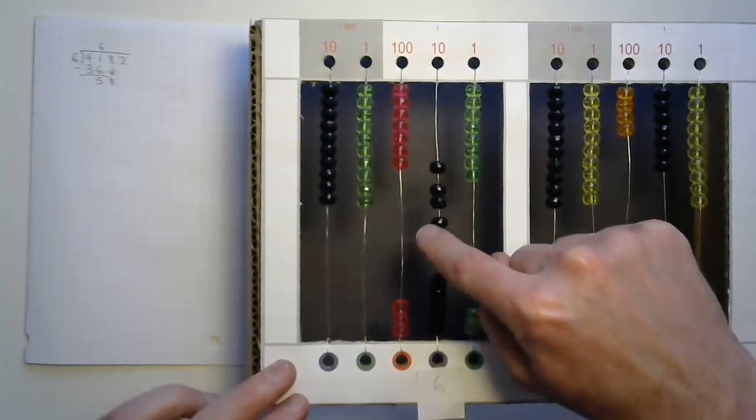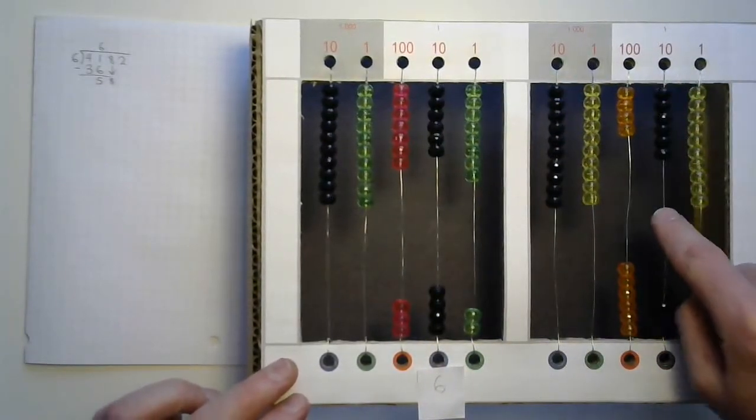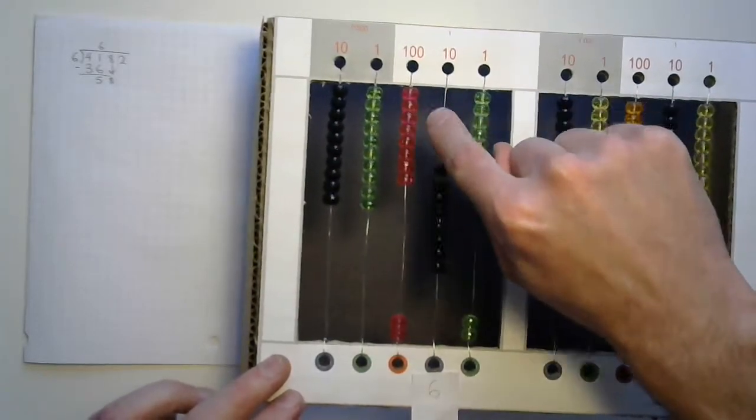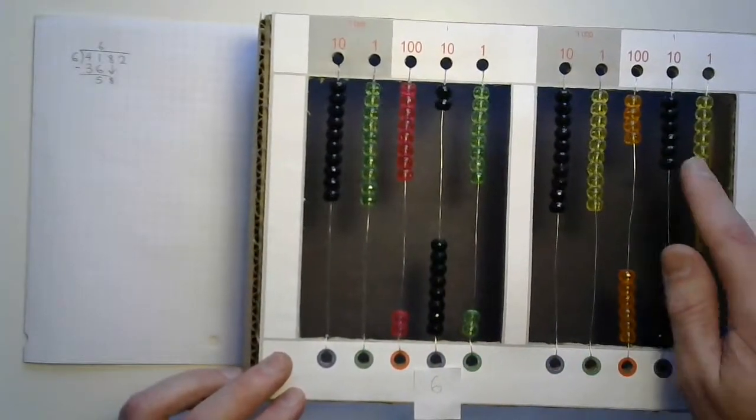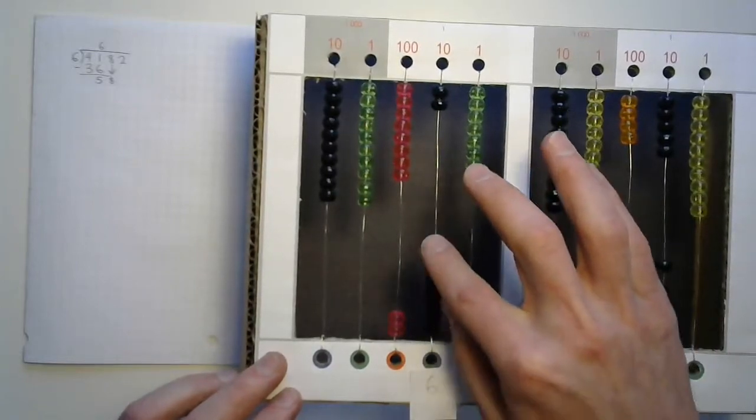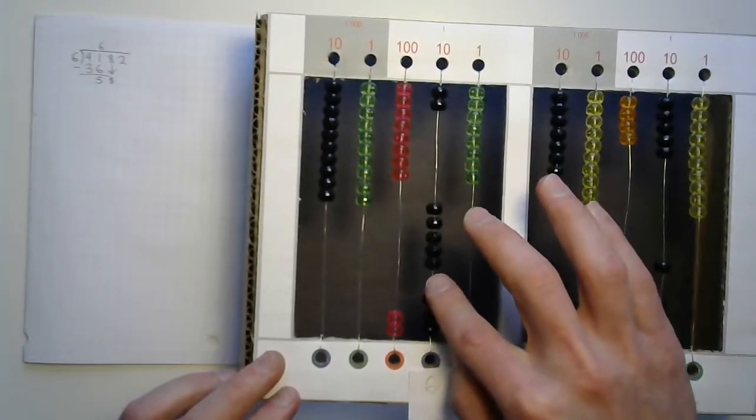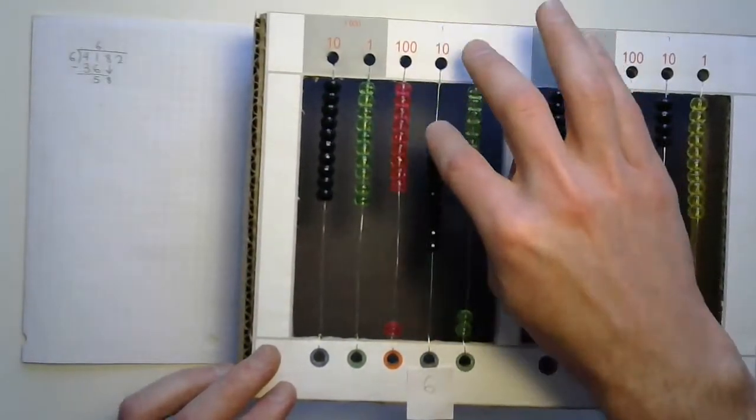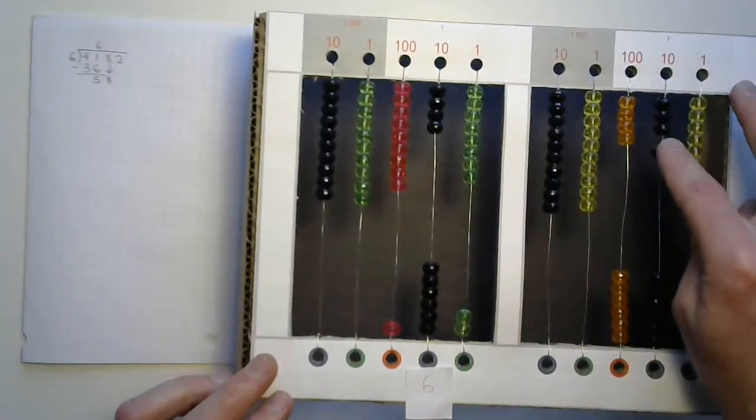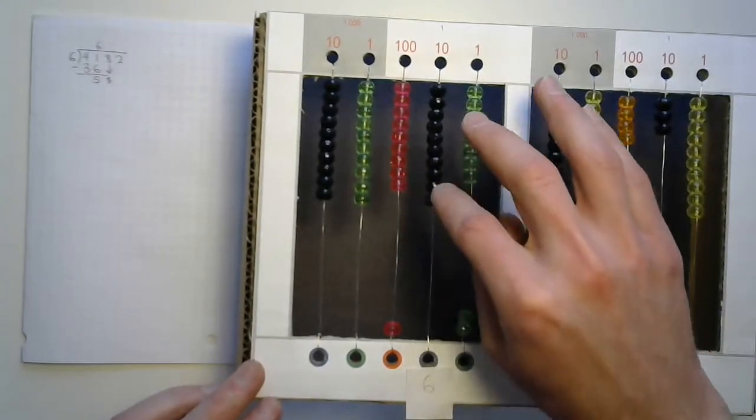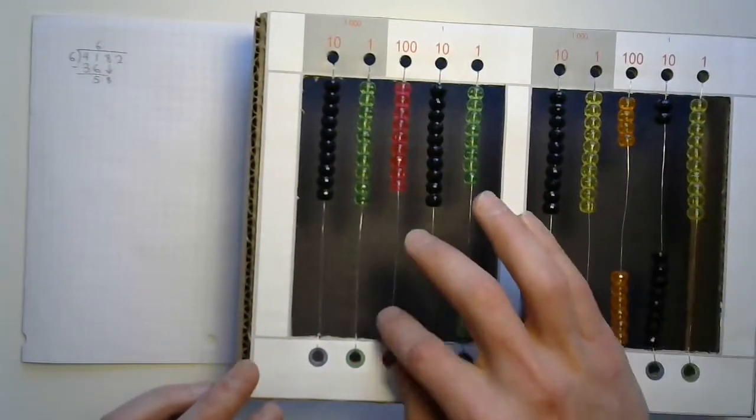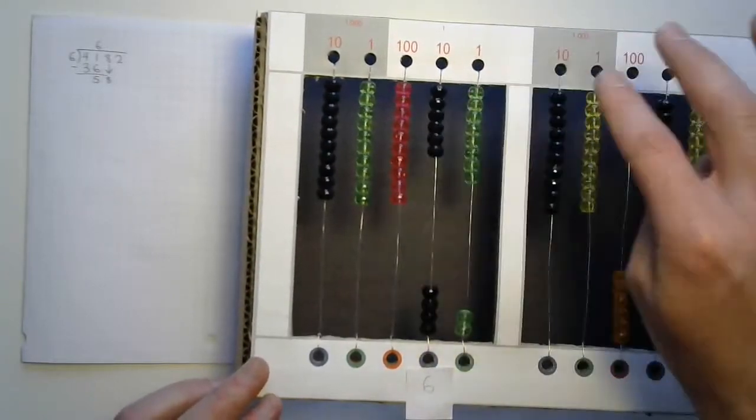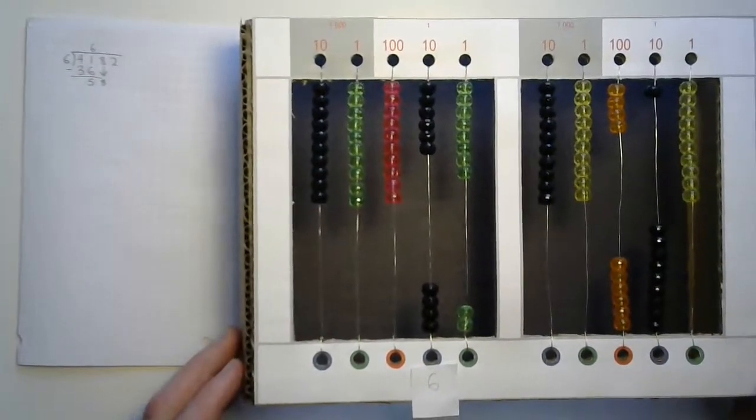But now we have to exchange to even start. One, two, three, four, five, six. One, two, three, four, exchanging five, six. One, two, three, four, five, six. Another group of six. There's two. So we're going to exchange this time. And there's the rest of that six. There's an entire six. Exchanging again. One, two, three, four, five, six. And that's as far as we can go.